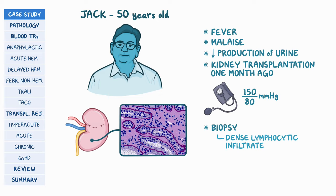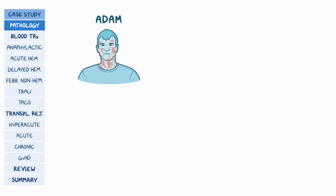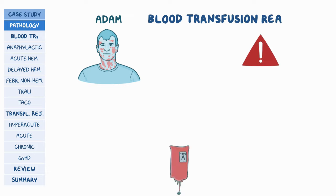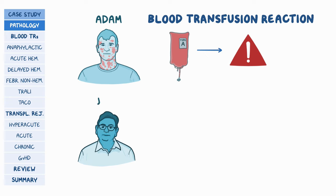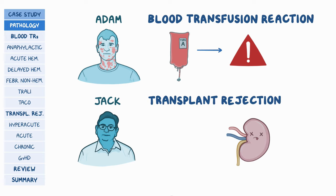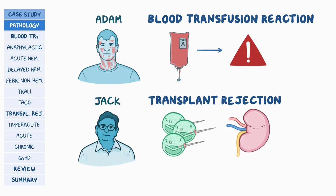Based on the initial presentation, Adam seems to have some form of blood transfusion reaction, which includes any adverse event that occurs following blood transfusion. Jack, on the other hand, seems to be experiencing some form of transplant rejection, which is when the immune system of the recipient attacks the transplanted organ or graft.